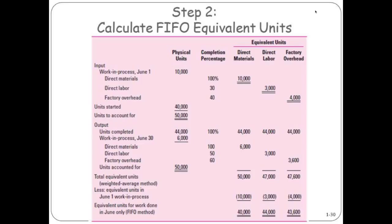That's the big difference. You have to subtract out the equivalent units and you have to subtract out the costs associated with those equivalent units when you do the math. So we know that these units were done to these percentages, which allowed us to calculate the equivalent units for materials, labor, and overhead.